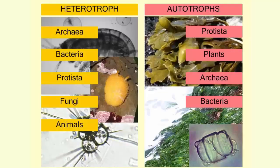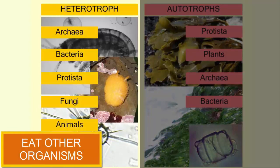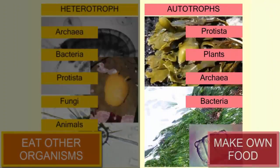All living organisms can be classified as autotrophs or heterotrophs. Heterotrophs acquire their food by eating other organisms. Autotrophs make their own food, usually through a process called photosynthesis.